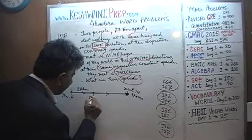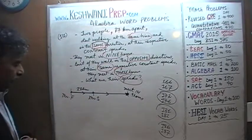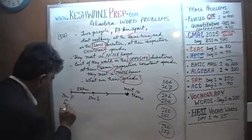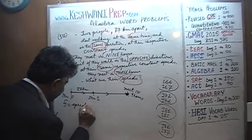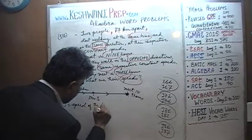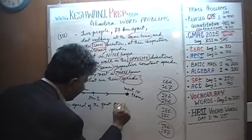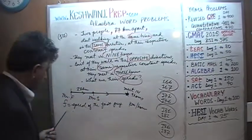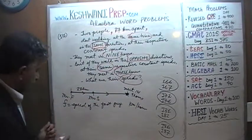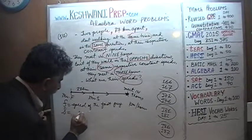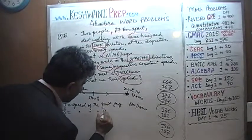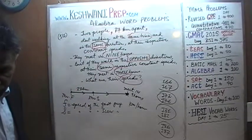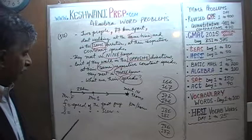And this one is Mr. S. We're going to use small letter f to represent the speed of the fast guy — expressed in kilometers per hour. Similarly, Mr. S will have small letter s to represent the speed of the slow guy. It's very important that you set it up properly, logically, systematically. It makes life easier later on down the road.